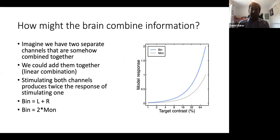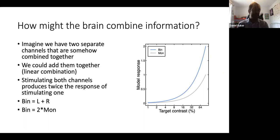So hopefully you'll indulge my maths lesson. How in principle might the brain combine information? Imagine that we have two separate channels which we're going to somehow combine together. In all of the examples today, those two channels are going to be the left and right eyes. But in principle, they could be other sorts of channels as well — different locations in space, perhaps adjacent locations on the retina, or different feature channels such as different colour channels, orientations, or spatial frequencies. But for today, we're just thinking about binocular combination.